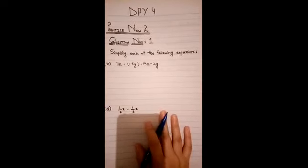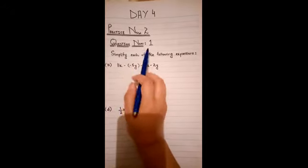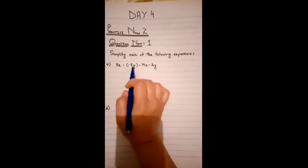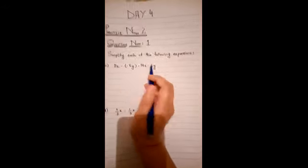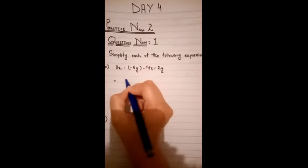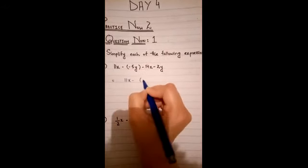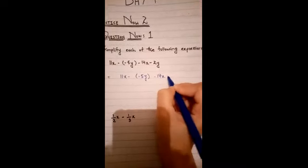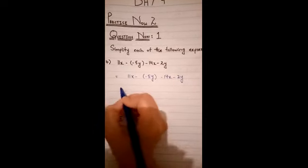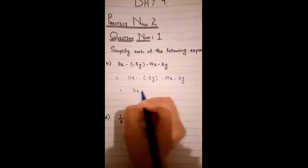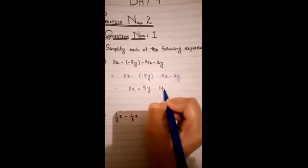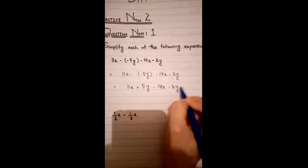These are the following questions that I am going to solve for you. Question number 1: Simplify each of the following expressions. 11x minus (-5y) minus 14x minus 2y. That will be written as 11x minus 5y minus 14x minus 2y.